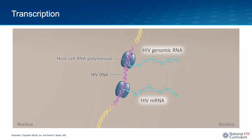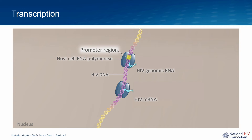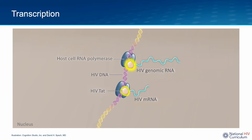HIV transcription produces two types of HIV RNA: genomic RNA, which is used as the genome for a new HIV particle, and messenger RNA (mRNA), which is used to synthesize HIV proteins. The active phase of transcription begins after the host cell polymerase binds to the promoter region of the HIV DNA. Transcription begins but soon pauses. However, binding of the HIV accessory protein TAT — transactivator of transcription — overrides this pause, dramatically increasing the efficiency of viral transcription, particularly for the full-length genomic HIV RNA.